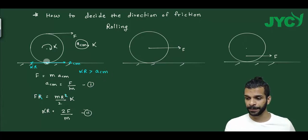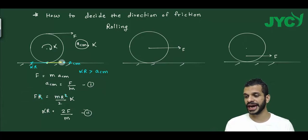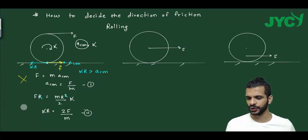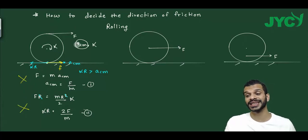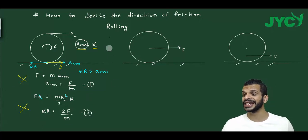Since alpha·r is greater than a_cm, this means the contact point wants to move backward. So to stop it, friction must act forward. Therefore, friction direction here is forward. Now for the actual question, we will take friction as forward and solve. Note that these equations are only valid to decide the direction of friction, not to find actual values of alpha and a_cm.